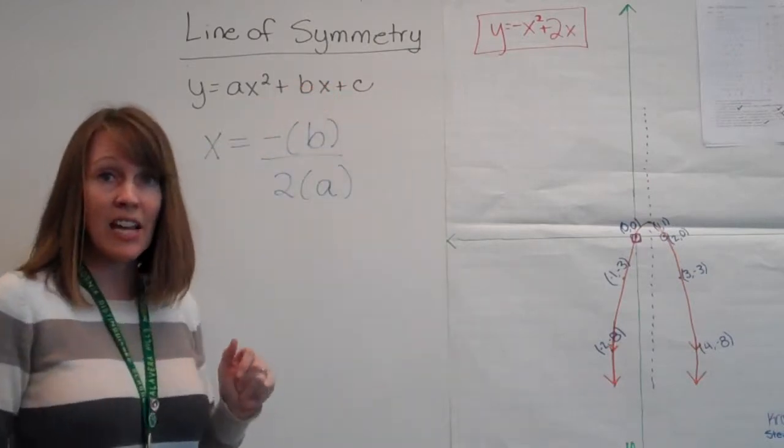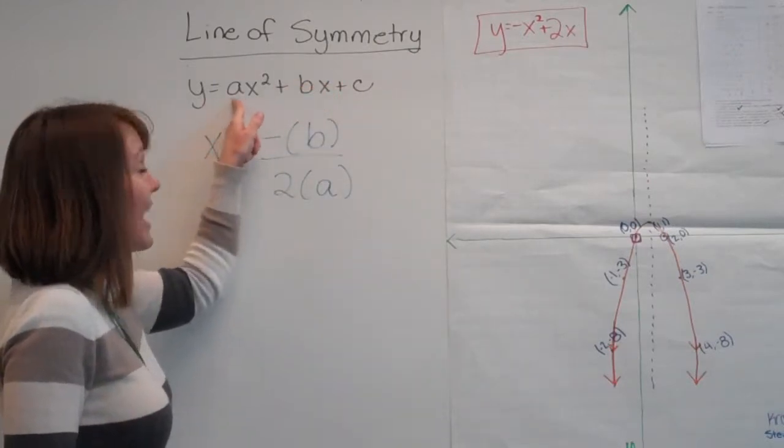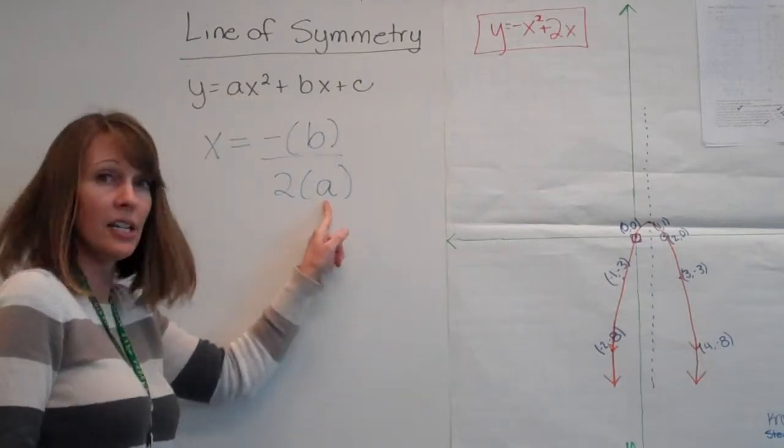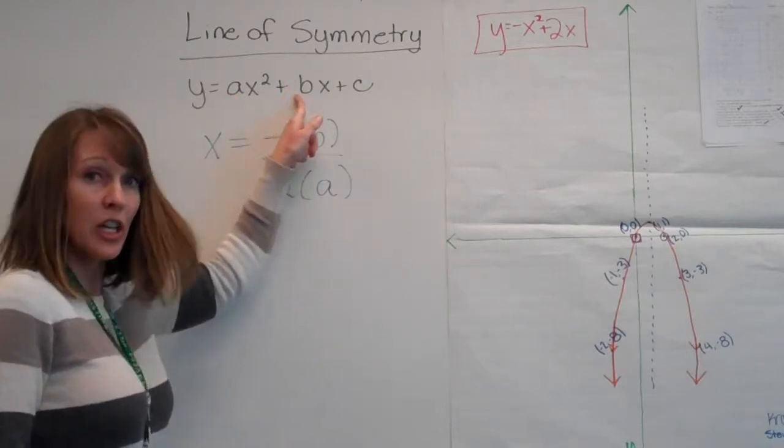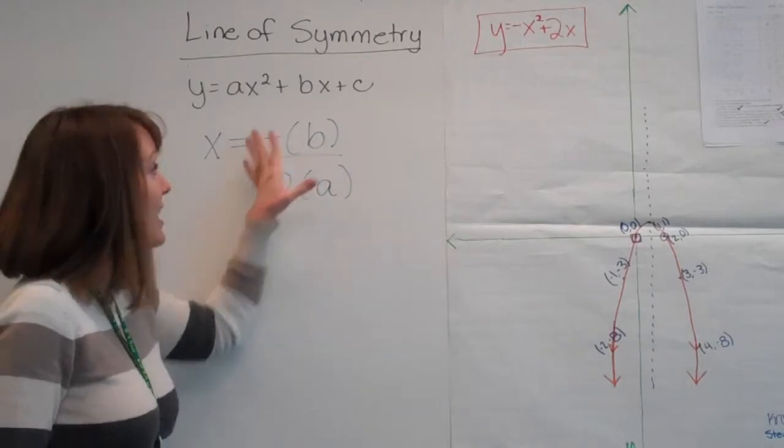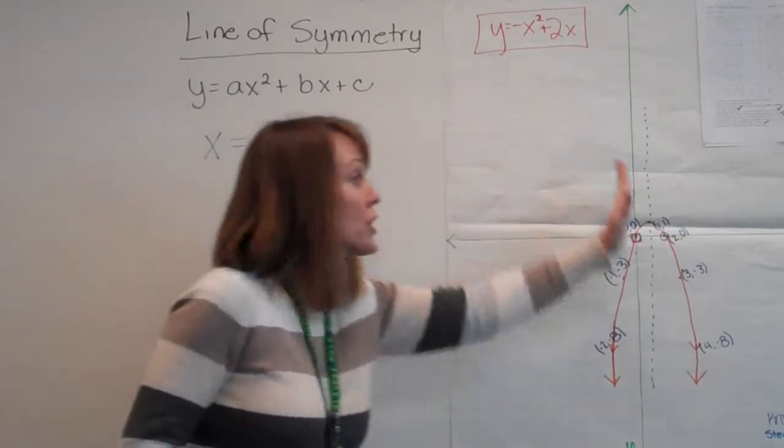So once the equation's in standard form, all we need to do is take this a value, the number in front of the x squared and put it here, this b value, the number in front of the x, put it here, and solve this for the number which will give us our center.